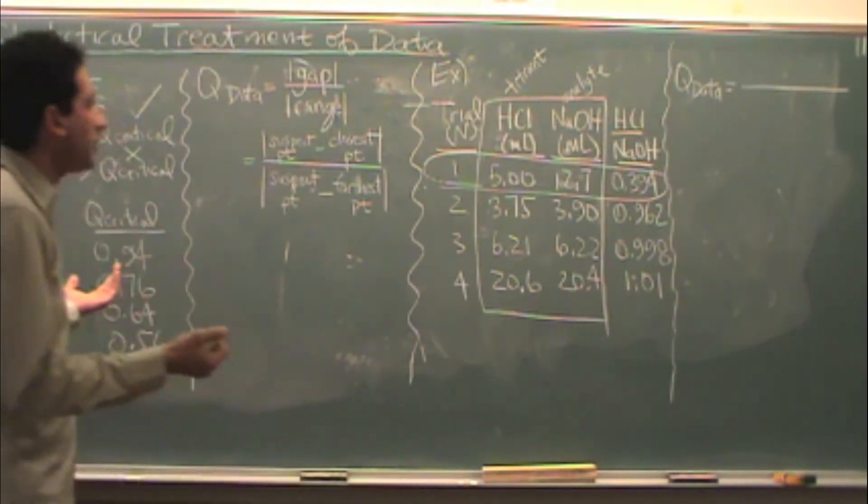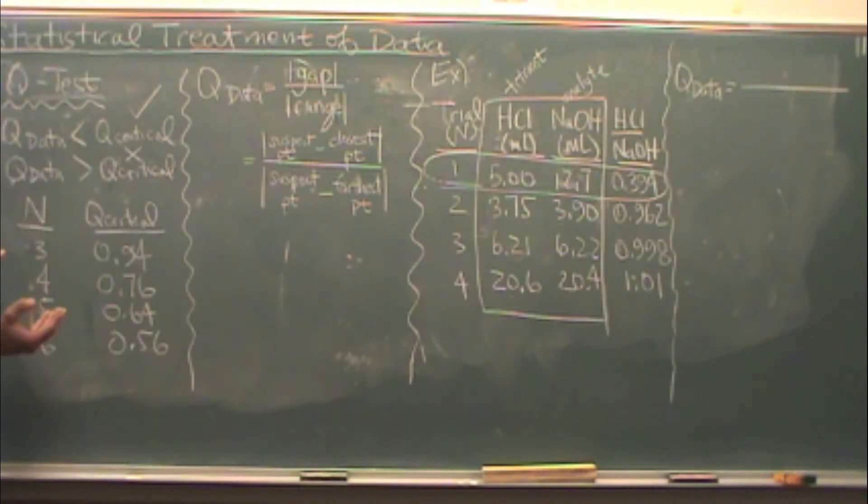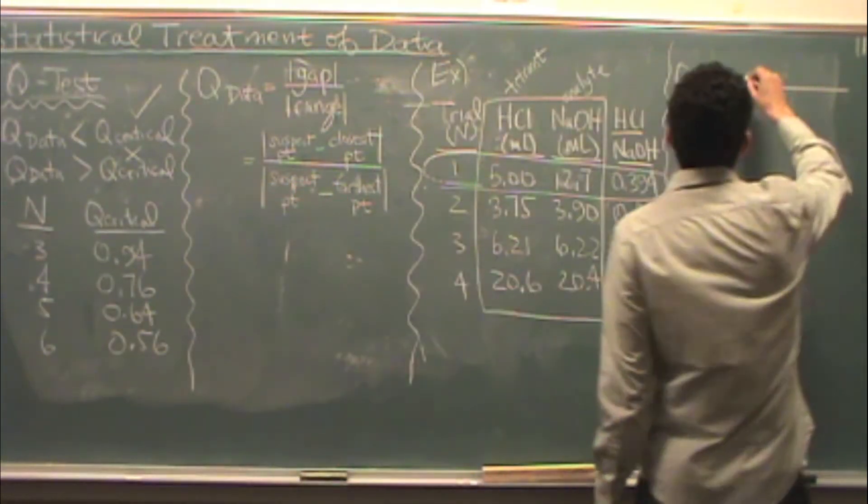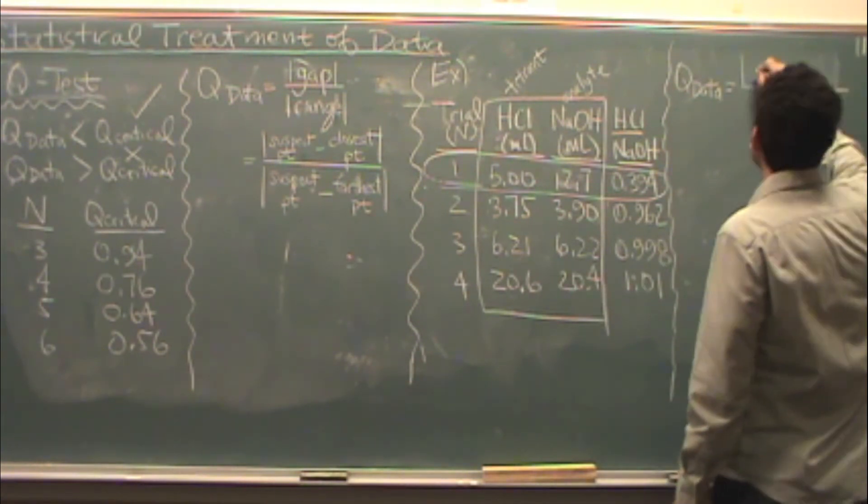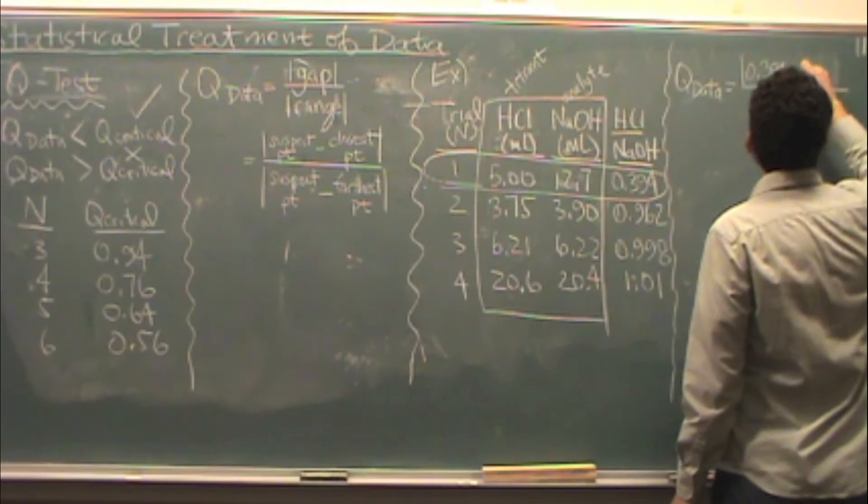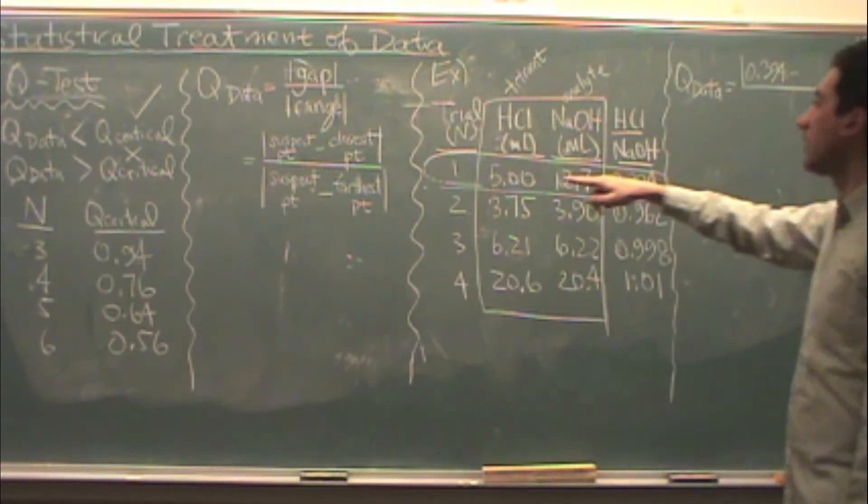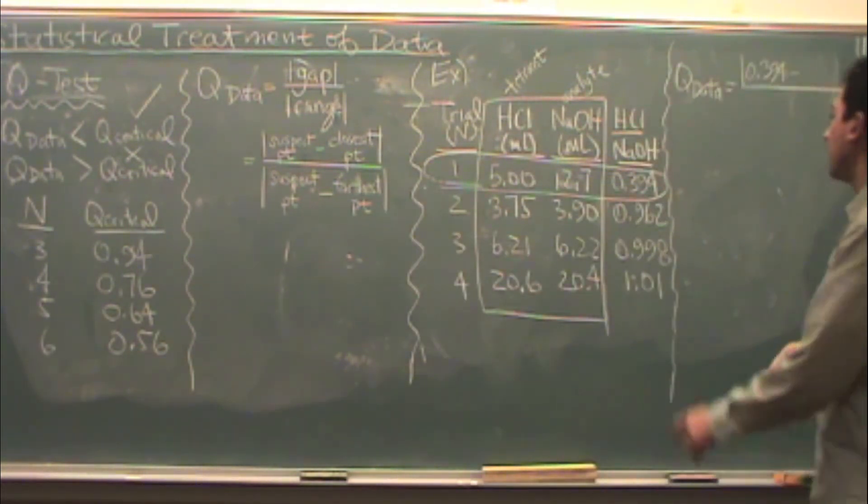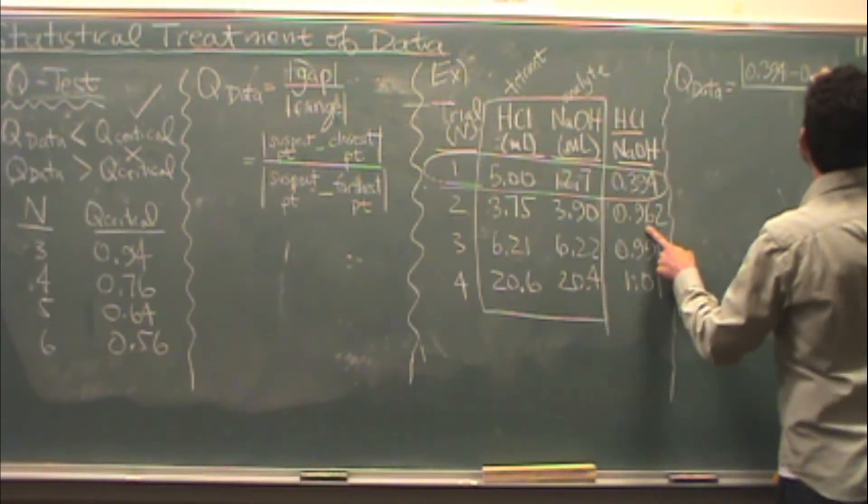So let's do the Q test on it to see if that first trial is good or not. I'm going to take the gap on top which is the suspect data, the 0.394, and I'm going to subtract that from the closest numerical point to it. That's the 0.962. Numerically that's the closest number.